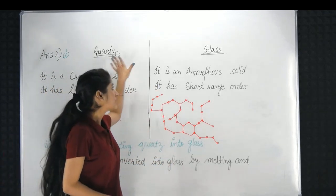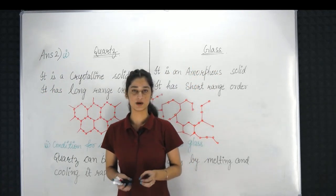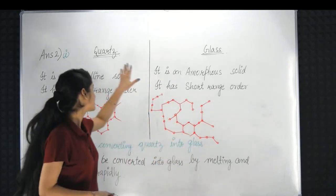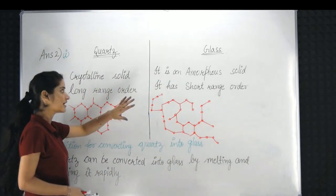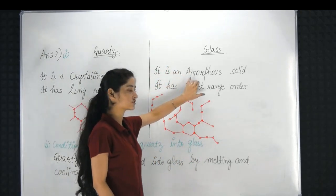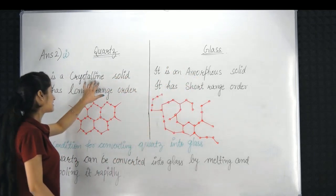Quartz and glass are mainly different in the arrangement of their constituent particles. Quartz is a crystalline solid with long range order, while glass is an amorphous solid with short range order.